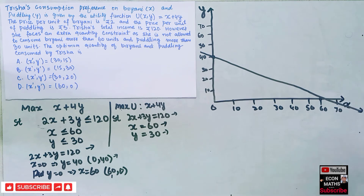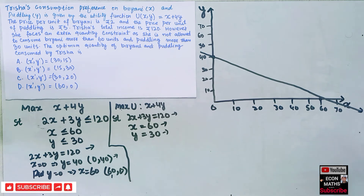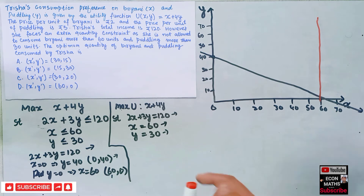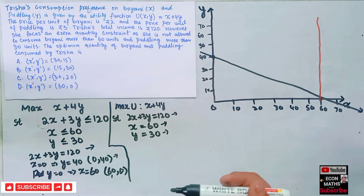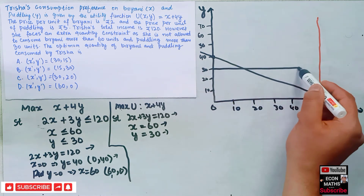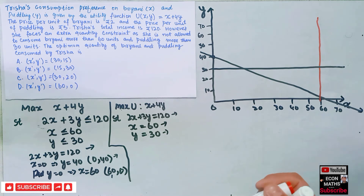Next, we add the constraint x = 60, which is a vertical line at x = 60. Then for y = 30, the graph is a horizontal line parallel to the x-axis at y = 30. We now have all three constraints drawn on the graph.